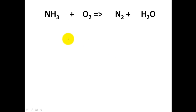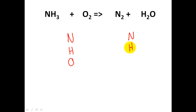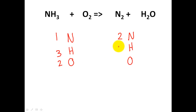In this problem, please press pause and try the atom inventory on your own. I have one nitrogen, three hydrogens, two oxygens on the reactant side; two nitrogens, two hydrogens, one oxygen on the product side. As we work this out, we can see these are not equal — I have to use coefficients to satisfy the law of conservation of mass.